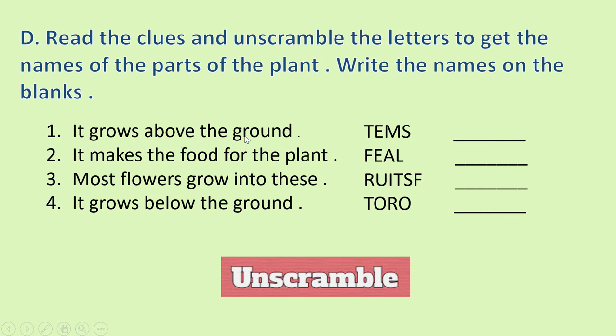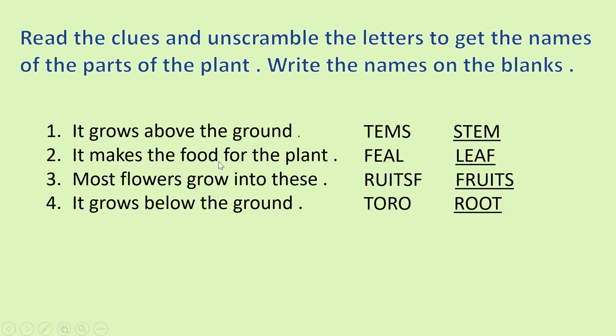First, it grows above the ground. It makes the food for the plant. Most plants grow into these. And the fourth one is, it grows below the ground. Okay. First, it grows above the ground. The answer is stem. You have to unscramble it.